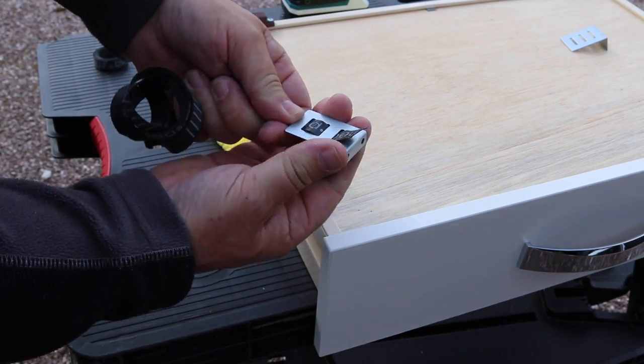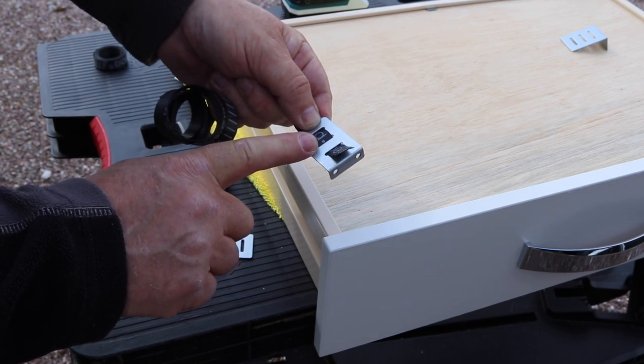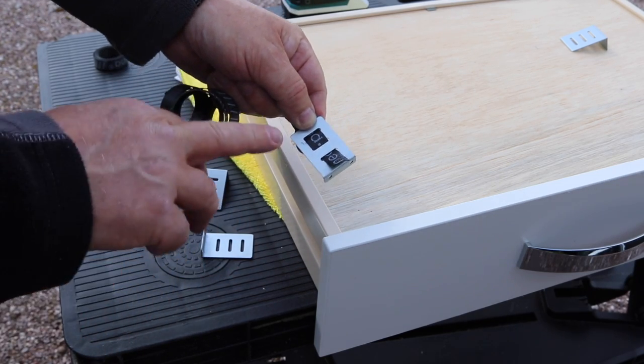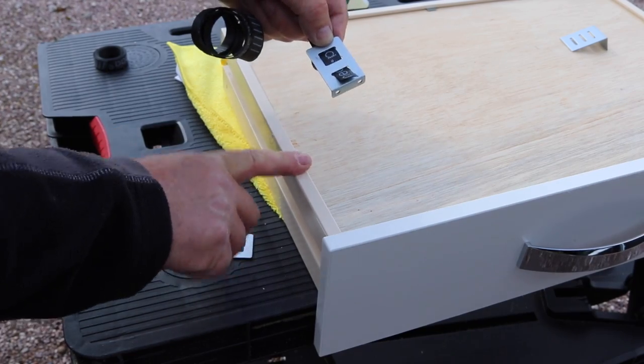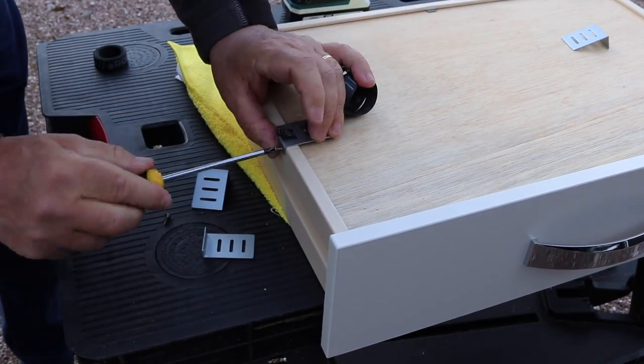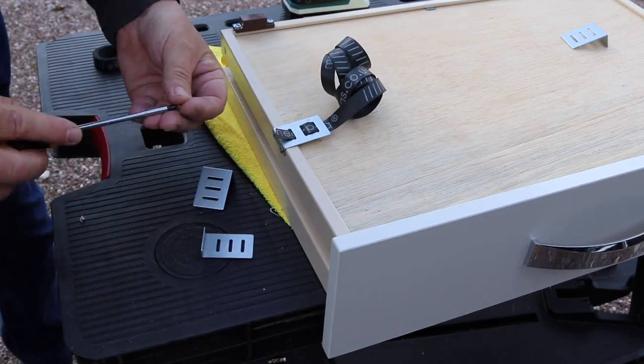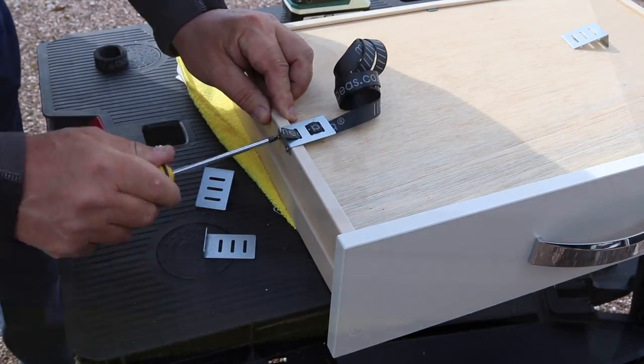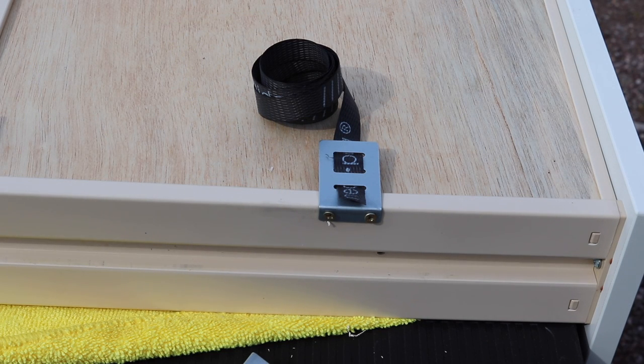And then back through like so, and that's quite strong. It's not going to come off. So what we're going to do now is we're going to screw this to the actual side of the drawer. So that's now fitted.